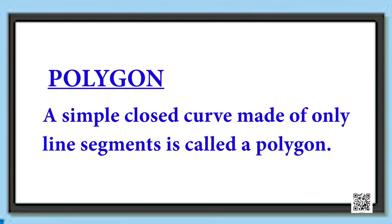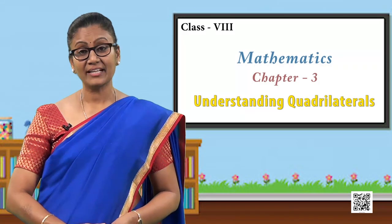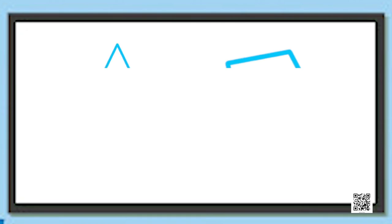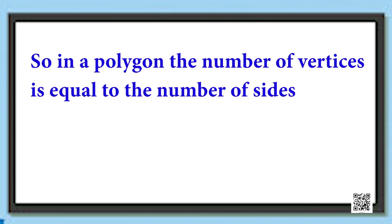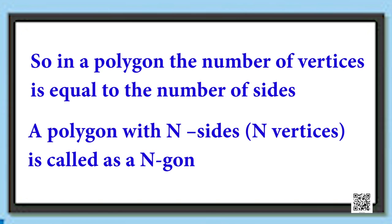A simple closed curve made of only line segments is called a polygon. Now look at these polygons and try to count the number of sides and the vertices of each. In each of these polygons, the number of vertices is always equal to the number of sides. Generally, a polygon with n sides is referred to as an n-sided polygon or an n-gon.